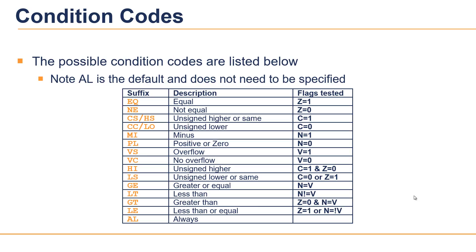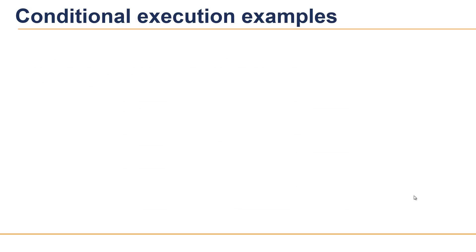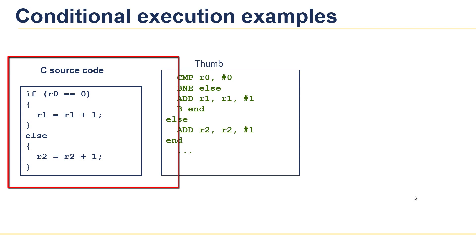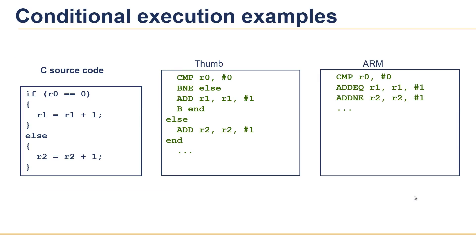Here are some condition code suffixes that can be used with branch instructions. BEQ means branch if equal, and BNE means branch if not equal; other suffixes follow the same concept. For the final exercise, we convert a C code snippet into Thumb and ARM instruction sets. In Thumb mode with unconditional code, it takes five instructions — that is 10 bytes. In ARM instruction set, it takes only three instructions, but each is four bytes, totaling 12 bytes.